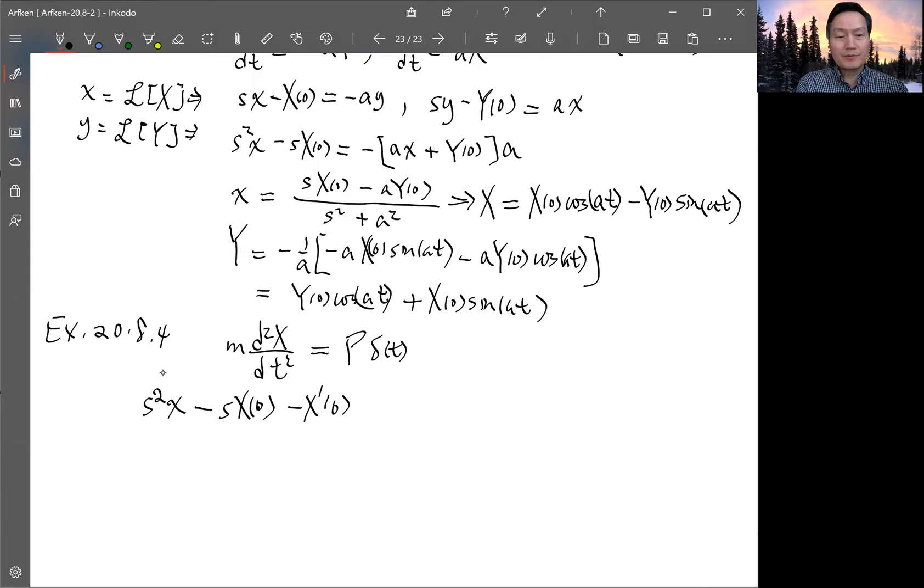And then minus S times x₀ minus x prime of 0. So that all of that is multiplied by m, but you can divide m to the other side. So it equals to p over m and the Laplace transform of delta function, which is just one. So this is p over m.